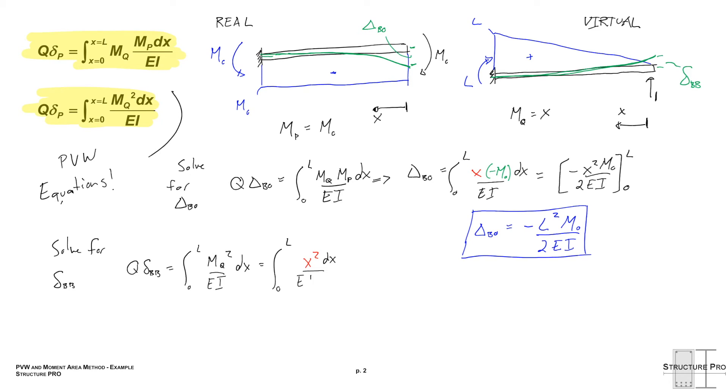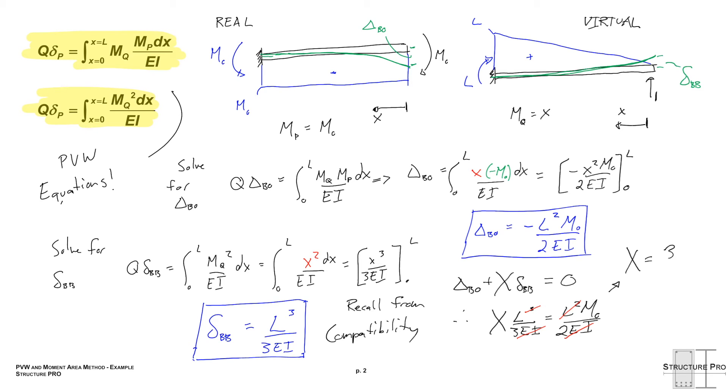And similar thing, solving for delta bb, we can get that it's the integral from zero to l of x squared dx over ei. And that just means it's x cubed over 3 ei. Plug in your l. You know, integration, good stuff. Anyway, so delta bb is l cubed over 3 ei. So that actually was pretty painless. Once we set it up correctly, if we had chosen our x at the other end, going to the right, it might have been a little more difficult. And now we can recall from compatibility that the delta bo plus x delta bb equals zero. Plugging these things in and doing a little bit of fancy cancellation results in solving for our redundant value x of 3 mo over 2 l. And that is in the positive direction vertically. We know this redundant is acting vertically because it came out positive, and that's the direction we had our redundant drawn.